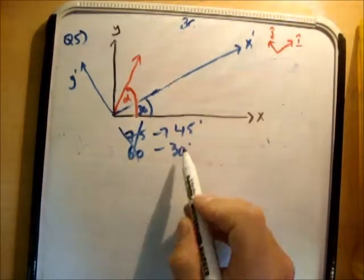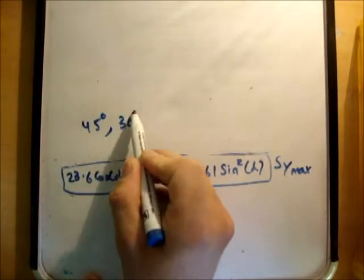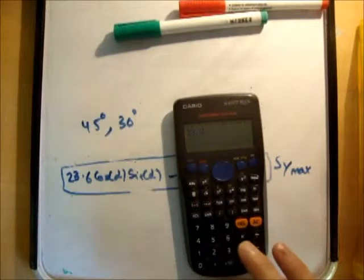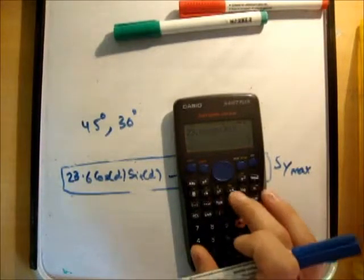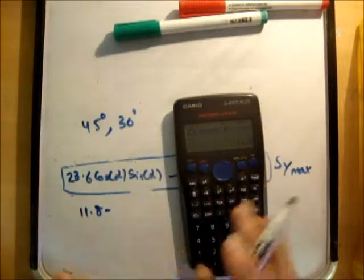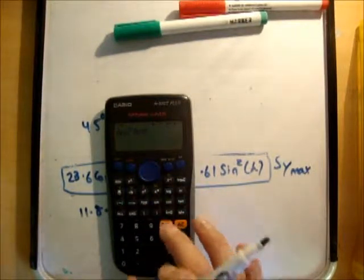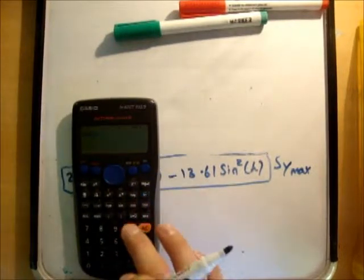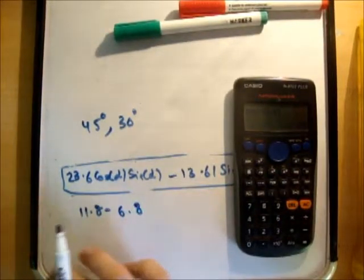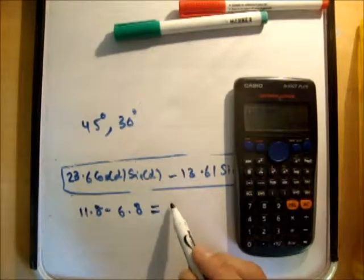So instead of plugging in these two values we plug in both 45 degrees and 30 degrees. So let's just plug them in. So we get 23.6 multiplied by the cos of 45 first, multiplied by the sine of 45, giving an answer of 11.8 minus, now sine squared alpha. So I'm going to say sine of 45, square that and multiply that by 13.61, getting an answer of 6.8. And the answer then becomes 4.995 or say 5 meters.